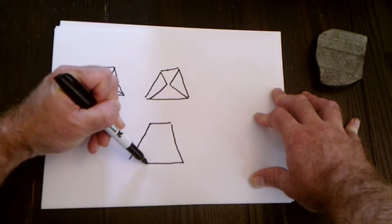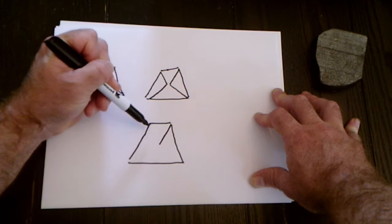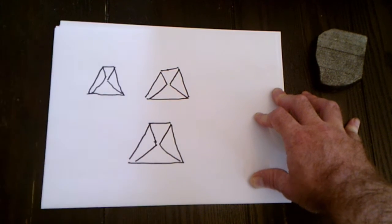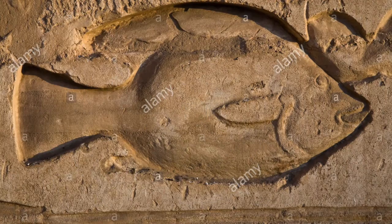One more time. Top, diagonal down, diagonal down, flat across, top of the X to the middle, and then bottom of the X, with the top again being a little shorter. And that's your butcher's block.